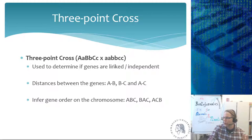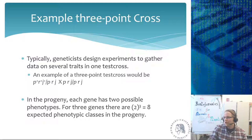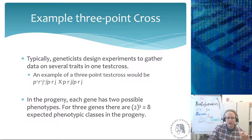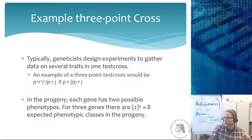When designing an experiment, you want to collect data on as many phenotypes or traits as possible. You take an individual heterozygous for genes P, R, and J, and cross it with a homozygous individual. In the progeny, each gene has two possibilities, so for three genes there are eight expected phenotypic classes — two to the power of three. When they are independent, you get eight different types of individuals with combinations of these three phenotype classes.